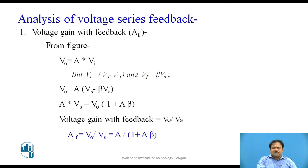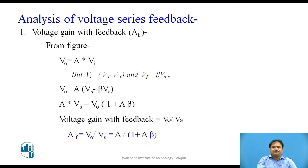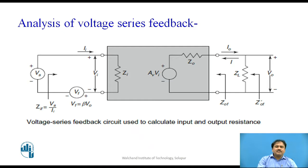Arranging all the terms and defining the voltage gain with feedback as the ratio Vo upon Vs, we get the equation: A upon (1 + A·beta), where A is the open-loop gain — the gain without feedback — and beta is the feedback factor. So the gain with feedback is decreased, because we divide the open-loop gain A by the factor (1 + A·beta), which is always greater than one.